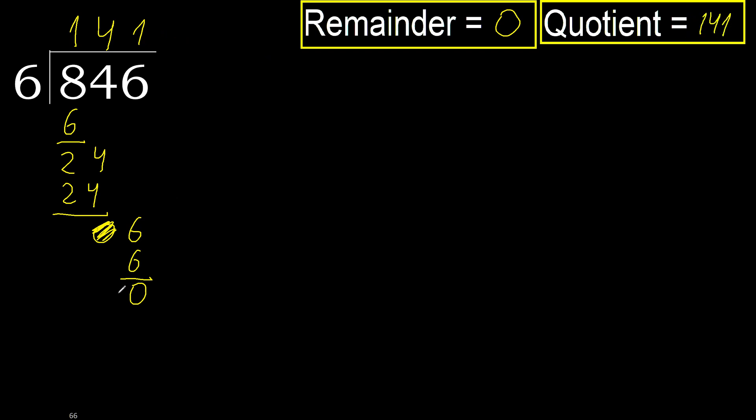Ok. Remainder 0. Therefore, 846 divided by 6 is 141.